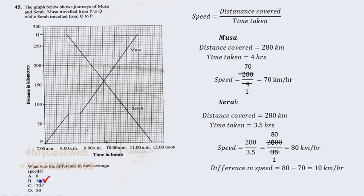Going back to the choices, the answer of 10 kilometers per hour is available. To the person who asked this question — keep doing more and more practice. Follow what we have done here and what we did previously, and you will be able to solve problems involving travel graphs. Goodbye.